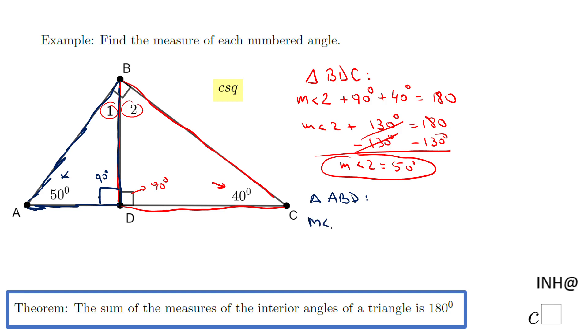The measure of angle 1 plus 90° plus 50° equals 180°. We're going to combine 90 and 50, that would be 140. So m∠1 + 140° = 180°. Subtract 140 from both sides.